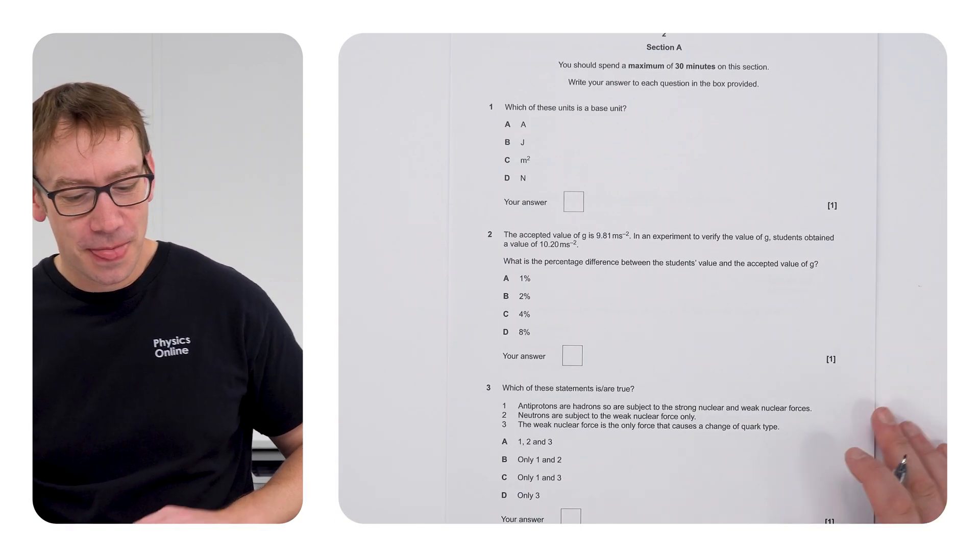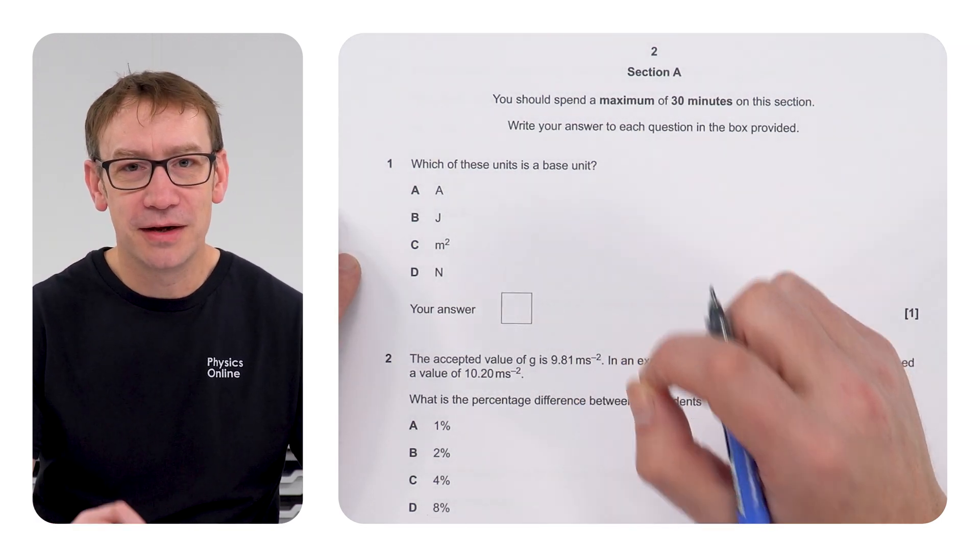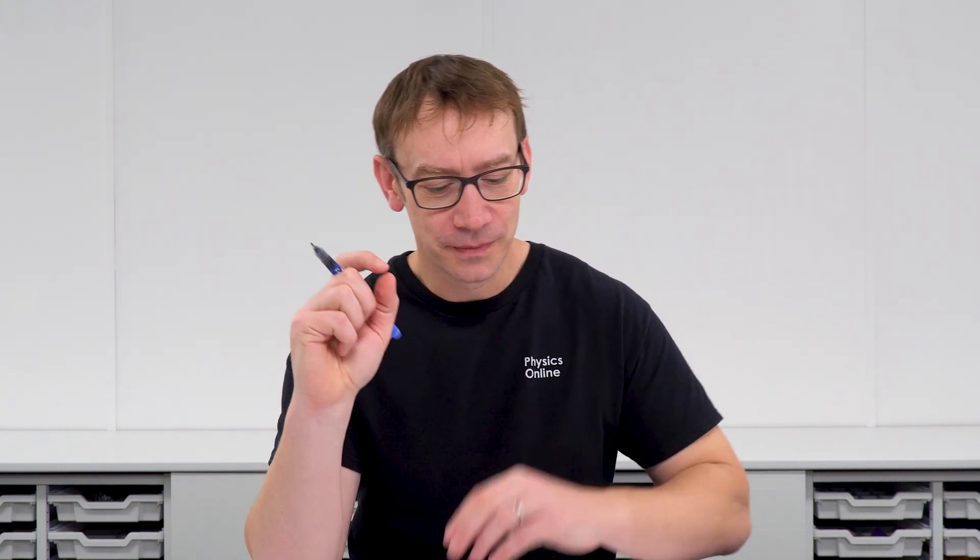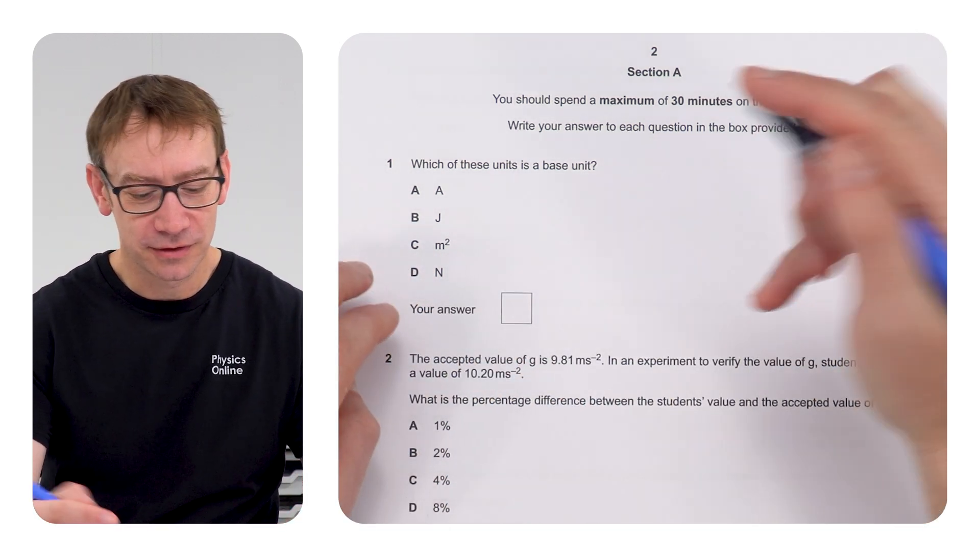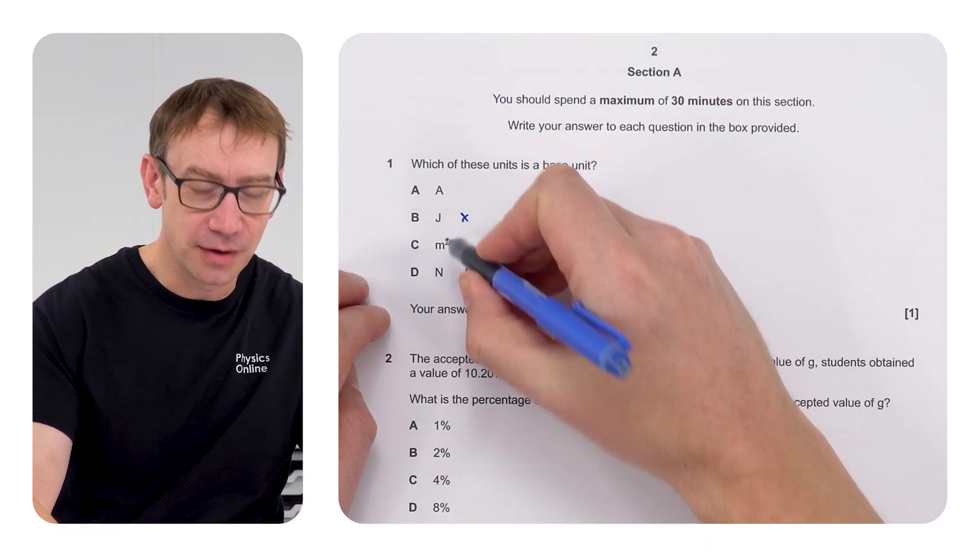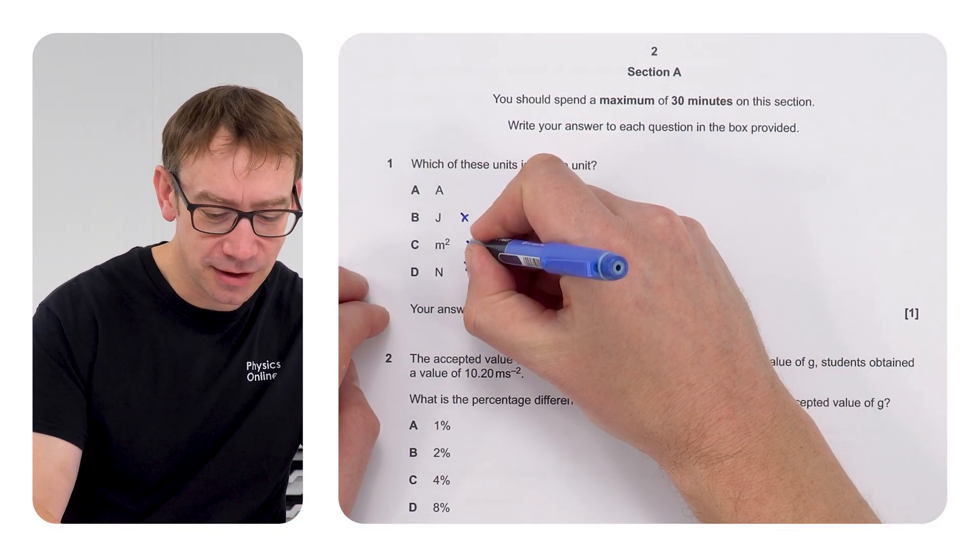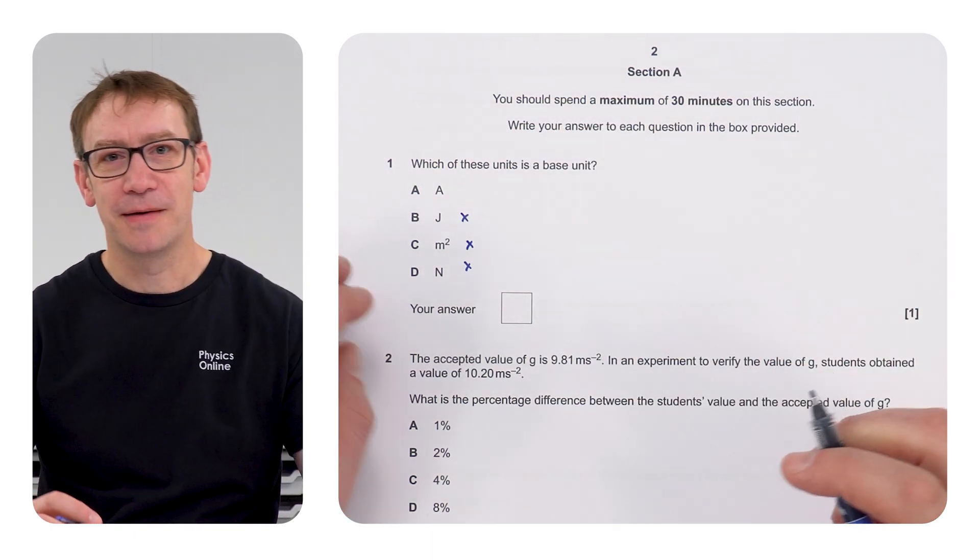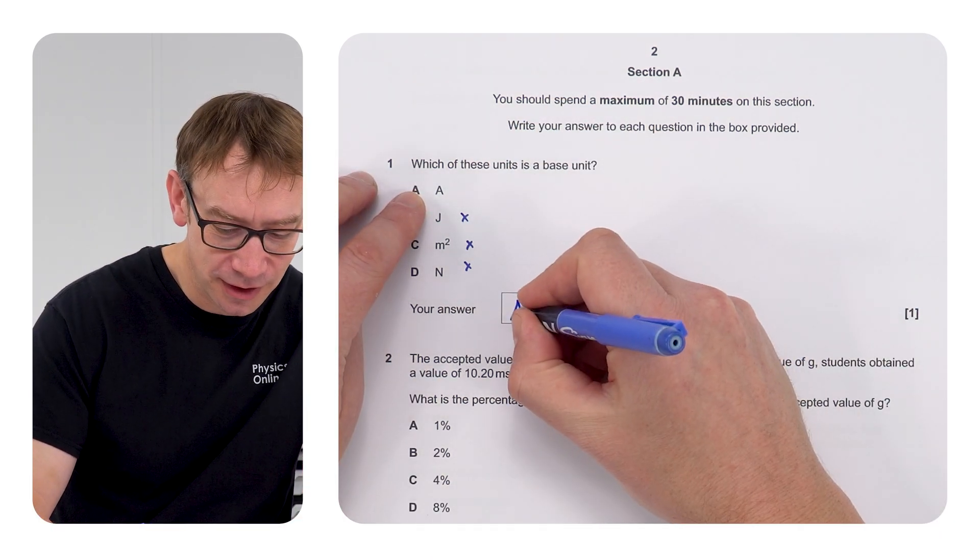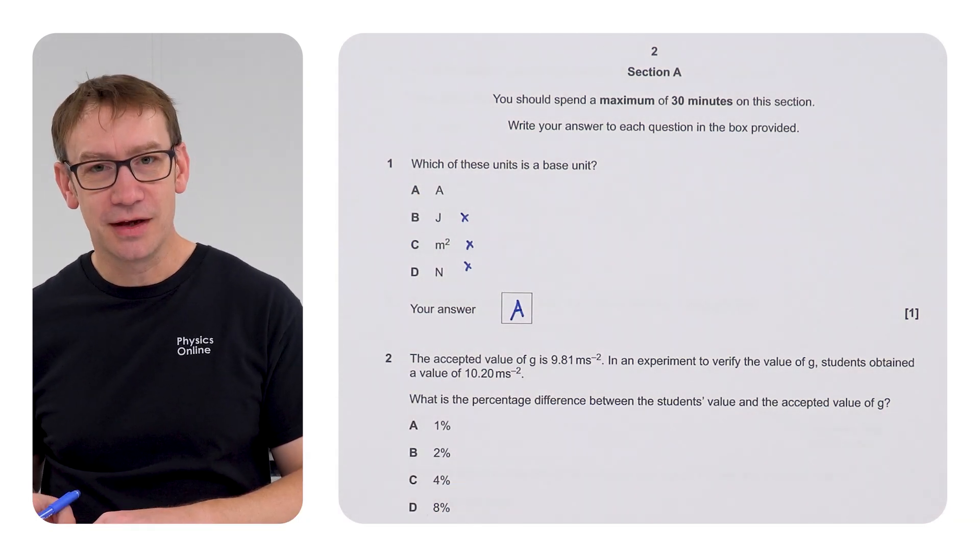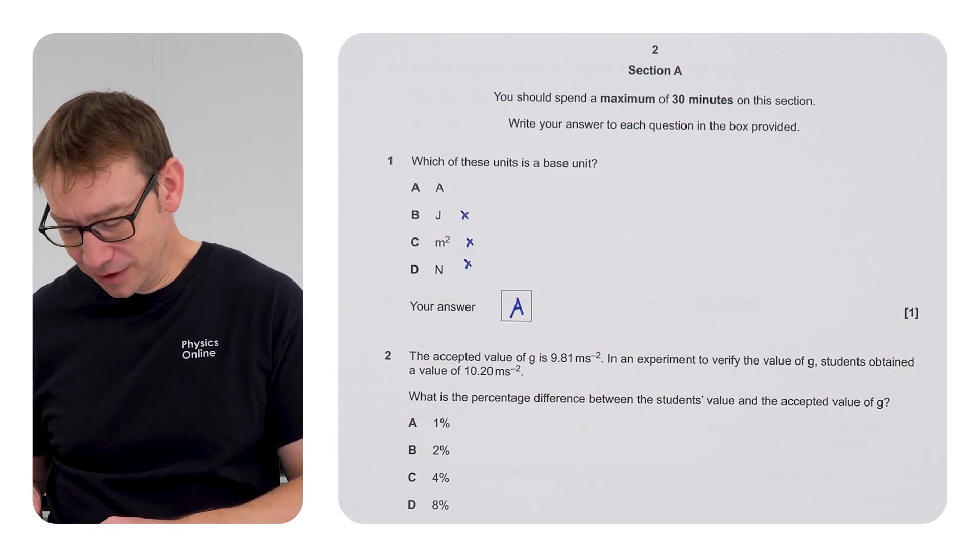From another paper: which of these is a base unit? This is just a recall of one of the seven base units, so we're thinking about things like kilograms, seconds, and so on. Here joule and newton are both derived units so it can't be those. We've also got a meter squared but it's not that. The answer is A, the ampere or the amp, and that is one of the seven base units.